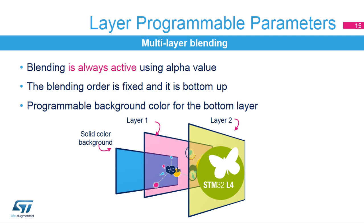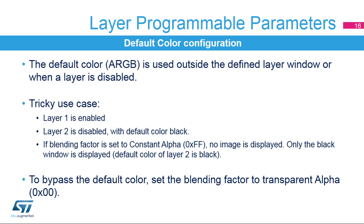The LTDC features configurable blending factors. The blending order is fixed and it is bottom-up. If two layers are enabled, layer 1 is first blended with the background color, then layer 2 is blended with the result of the previous blending. Each layer can have a default color in ARGB format, which is used outside the defined layer window or when a layer is disabled. Here is a tricky use case: layer 1 is enabled, layer 2 is disabled with default color set to black. If the blending factor is set to constant alpha equals 0xFF, no image is displayed — only the black window is displayed. To bypass the default color, set the blending factor to transparent, alpha equals 0x00.